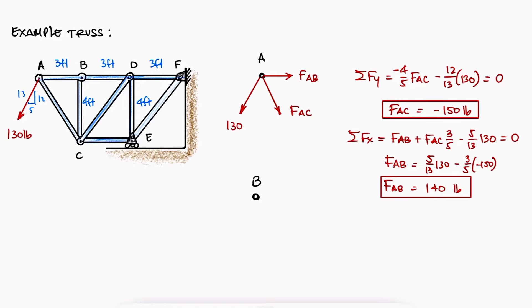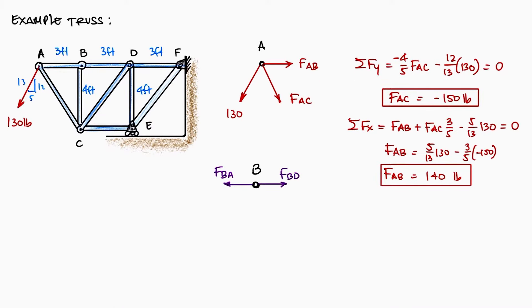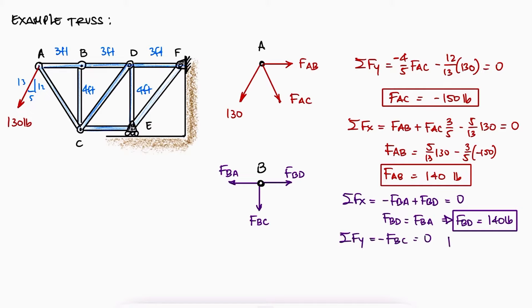At joint B, and once again assuming positive vectors for all unknown forces, a sum of forces in x shows that FBD is positive, and the sum of forces in y shows that FBC is 0.